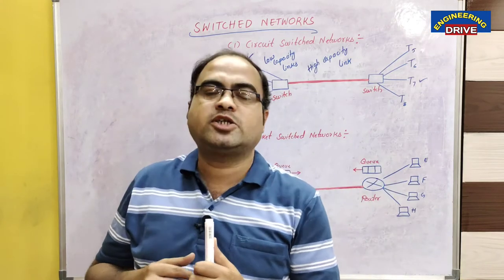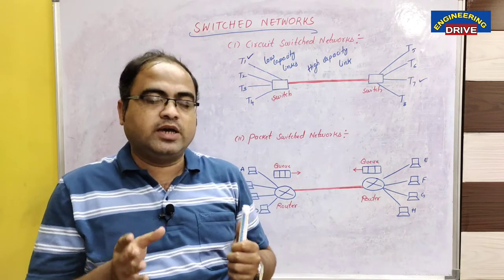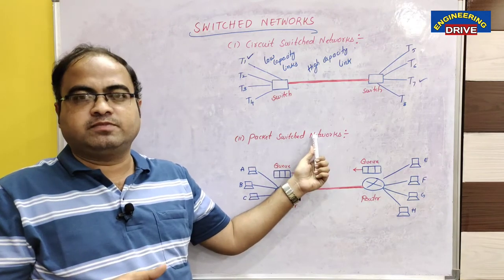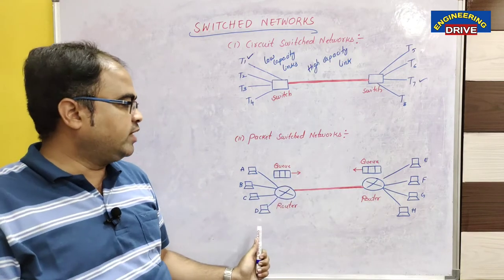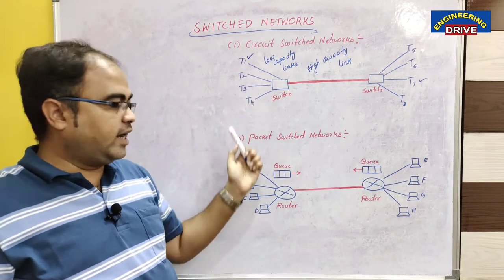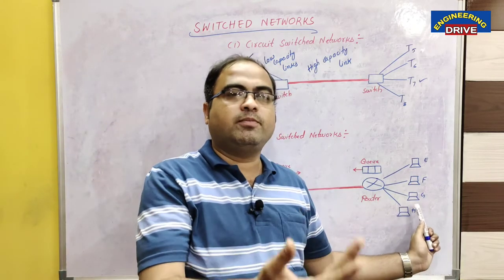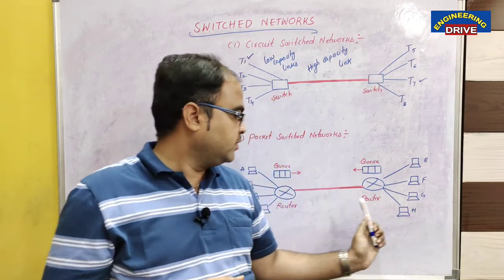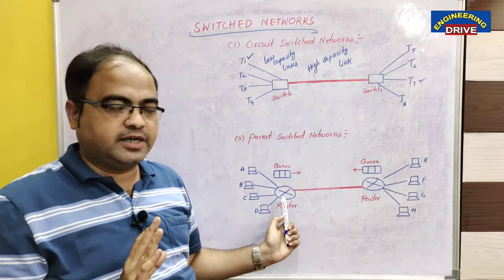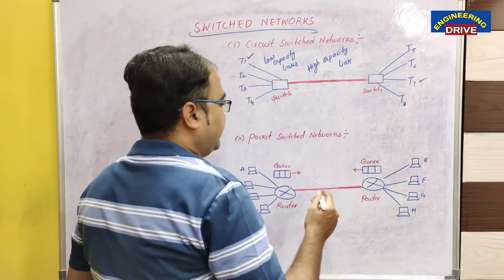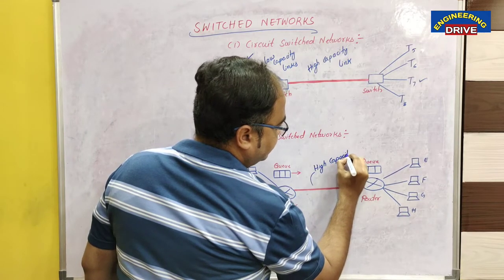We are now talking about how to establish communication among various electronic devices including computers, smartphones, and laptops. In this diagram, instead of telephones I have taken individual computers — four computers at the sender side and four at the receiver side. Instead of a switch, we now have a router, which is mainly responsible for transmitting the data. We also have a high capacity link connecting the two sides.